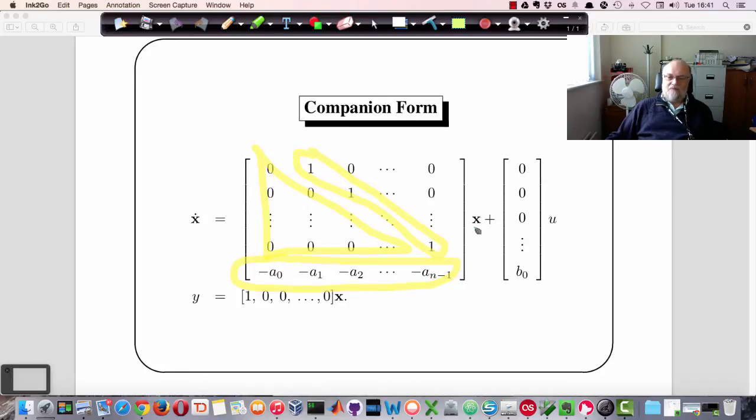And for the y variable, for the output equation, y is x_1. So, or that's the obvious choice. So y equals x_1 gives us 1, 0, 0.